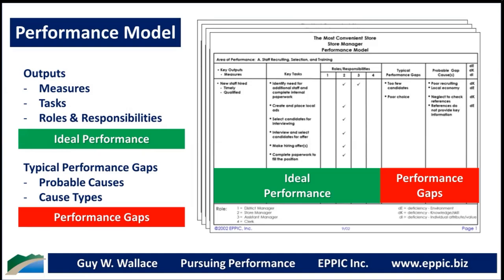I don't call it a root gap cause because I'm not asking 'why' five times on each one — I don't have time in a one-, two-, or three-day meeting. I just want to know what these people think. Now, just because I can get a group of master performers to come to consensus on what ideal performance is and what the gaps are doesn't make them right — but who else would you ask? Validate by doing observations after you've captured this kind of data if necessary.